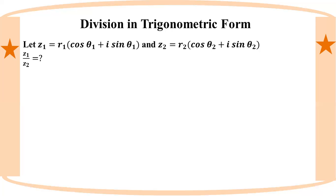This is the conjugate. The trigonometric form of the complex number z1 by z2. This is the multiplicative inverse.